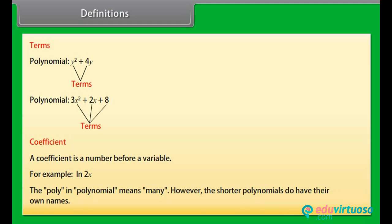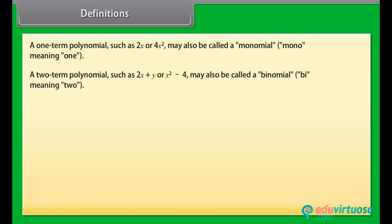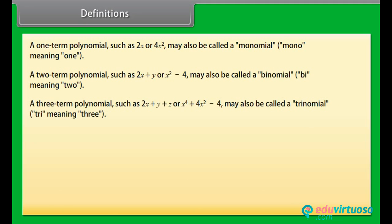Shorter polynomials have their own names. A one-term polynomial such as 2x or 4x squared may also be called a monomial — mono meaning 1. A two-term polynomial such as 2x plus y or x squared minus 4 may also be called a binomial — bi meaning 2. A three-term polynomial such as 2x plus y plus z may also be called a trinomial — tri meaning 3.